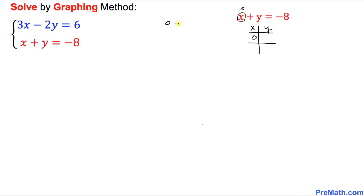With x equal to 0, we get 0 plus y equals negative 8, which gives us y equals negative 8. So when x is 0, y is negative 8.